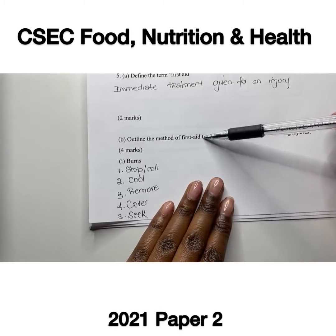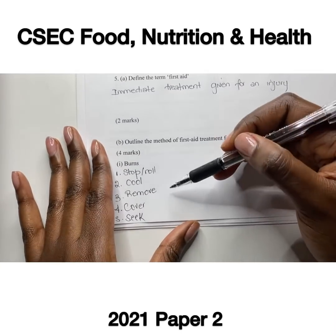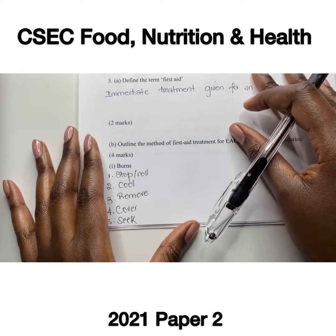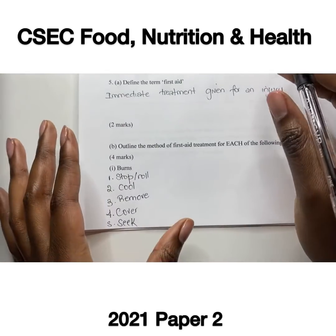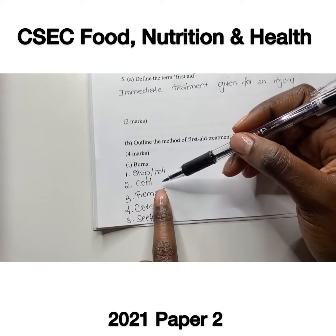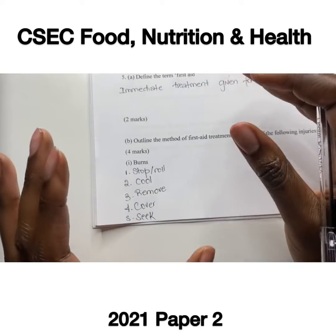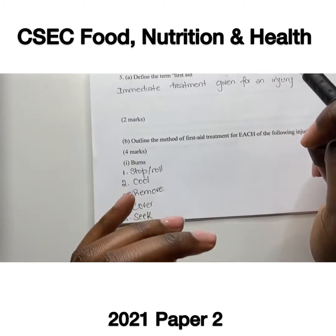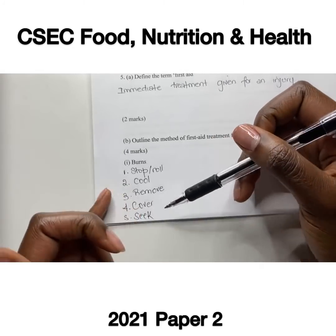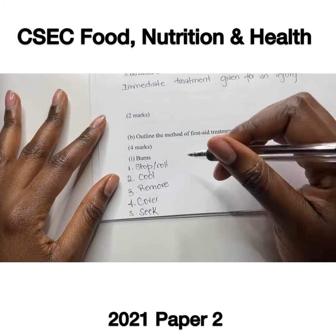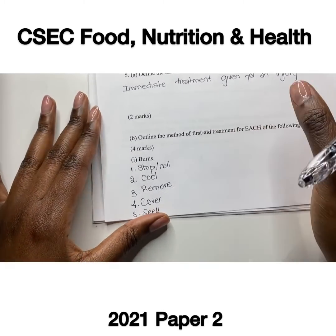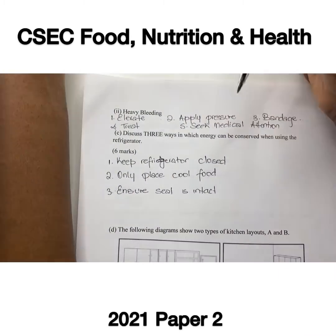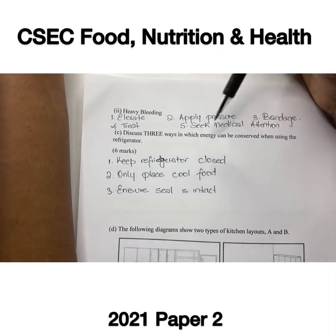Part B outlines first aid treatment for burns and heavy bleeding, with two marks allocated each. For burns: remove the source of heat, cool the burning area by placing it under cold running water, remove jewelry or clothing around the affected area, cover with a bandage, and seek professional help. For heavy bleeding: apply pressure, elevate the affected area, bandage, treat, and seek medical attention.